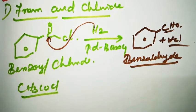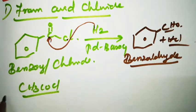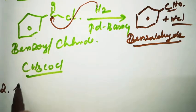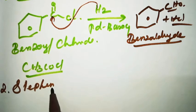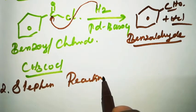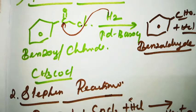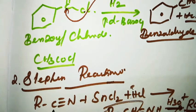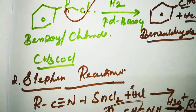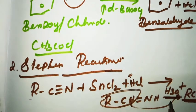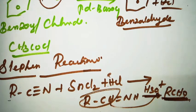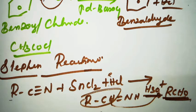The next preparation method is the Stephen reaction — a very important name reaction. From nitriles: R-CN reacts with SnCl2 and HCl to form R-CH=NH, then in the presence of H3O+ to form R-CHO. This is one preparation of aldehyde via the Stephen reaction.